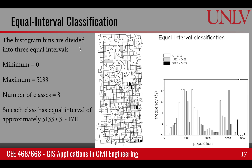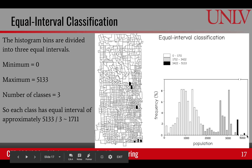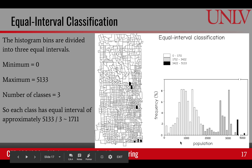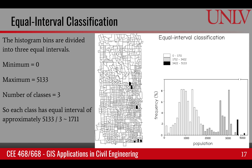In equal interval classification, it takes the x-axis of the values and divides it into three equal intervals. In this case, it goes from 0 to 5,133, so it divides 5,133 by 3 — the number of classes — and each class gets 1,711 values. This is a classification based on range, so high values don't get very many pixels or features, which can be a cosmetic problem when trying to show variation in the map.